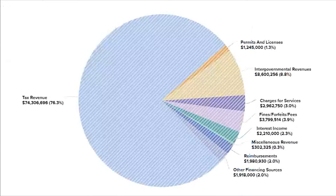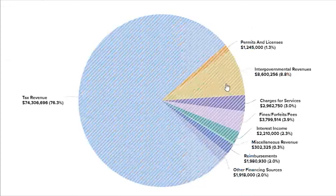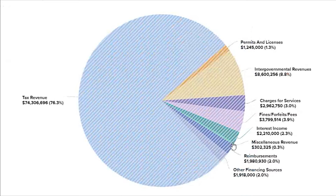Let's start with county revenues, or how the county brings in money. This pie chart breaks down all of the revenue types for the county in 2022. Most county revenue comes in through taxes, but the other revenue types include permits and licenses, intergovernmental revenues, charges for service, fines, forfeits, and fees, interest income, miscellaneous revenue, reimbursements, and other financing sources.